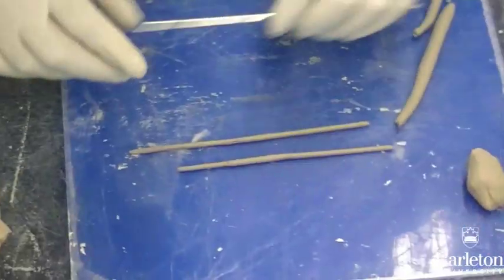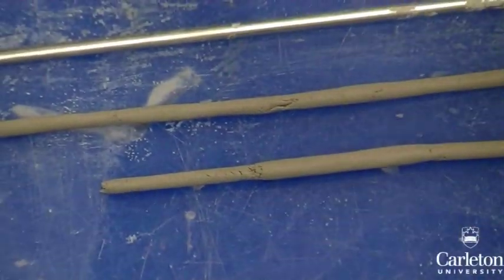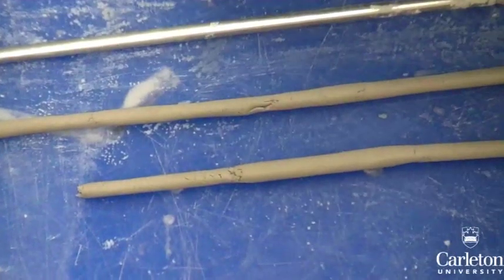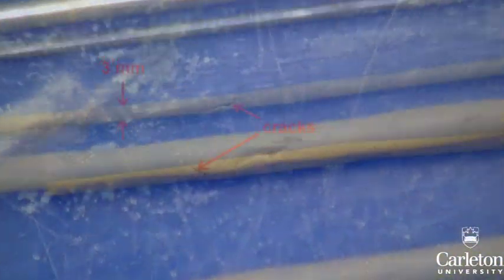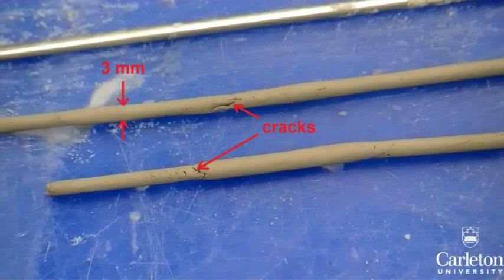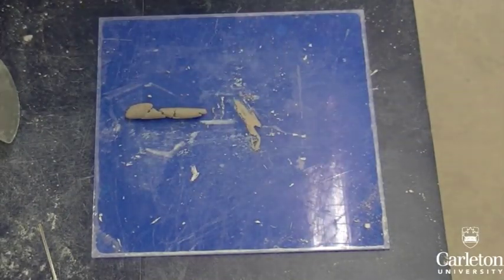Once you have created a strand 3mm thick, you can use the steel rod as a guide to know when to stop. Check closely for cracking. If there is no cracking, your sample is too wet. This is what cracking should look like at a strand diameter of 3mm. If cracking occurs before you reach a thickness of 3mm, your sample is too dry.